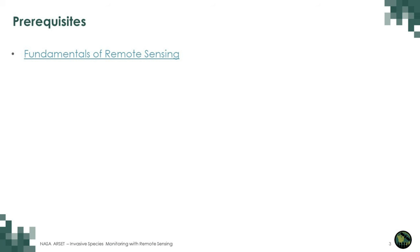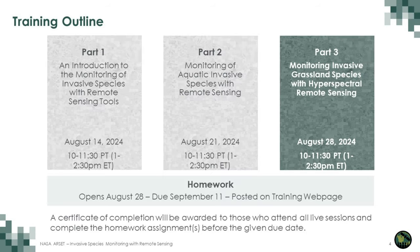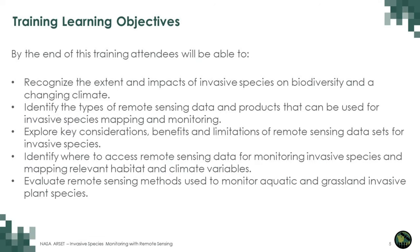We also encourage you to review parts one and two of this webinar if you weren't in for those sessions. To receive a certificate of completion, participants must complete the homework. It's going to open today, August 28th, and will close on September 11th. Everything will be posted on the training webpage. Our team has set the following overall objectives for the training: attendees will be able to recognize the extent and impact of invasive species, identify types of remote sensing data and products, and explore key considerations, benefits, and limitations of remote sensing data sets.